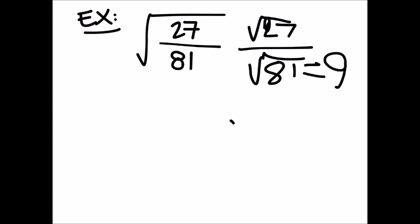But then we have to simplify 27. So we have to split it: 3 and 9. No, it's 3 and 9. 3 and 9, no 9 and 3. There.